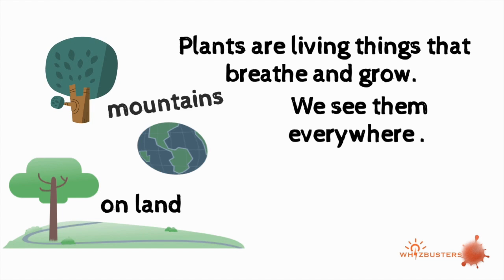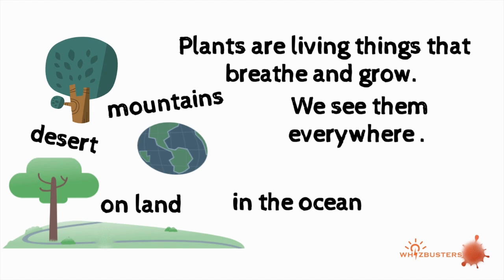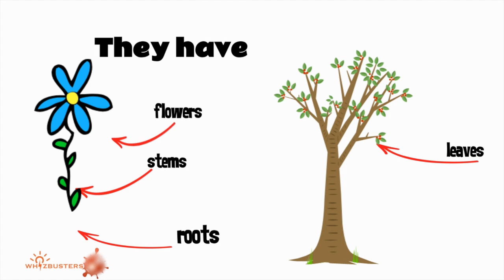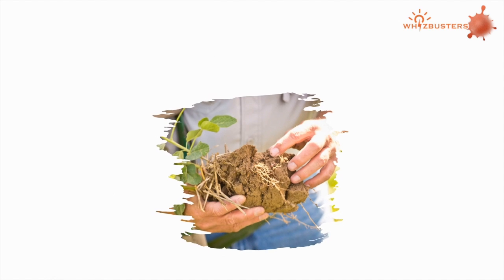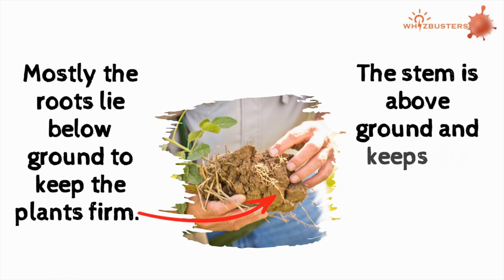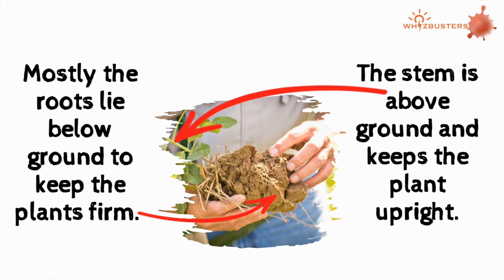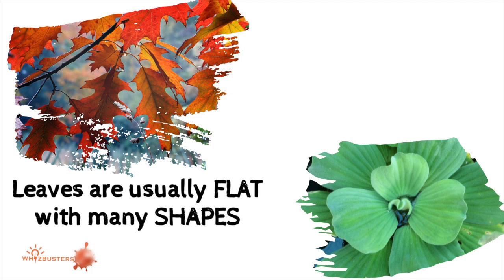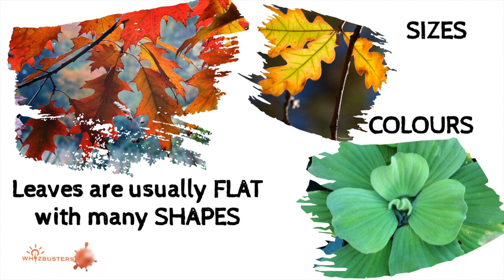Plants grow on land, in the mountains, the desert, and in the ocean. They have roots, stems, leaves, flowers, and fruits. Mostly the roots lie below ground to keep the plant firm. The stem is above ground and keeps the plant upright. Leaves are usually flat with many shapes, colors, and sizes.